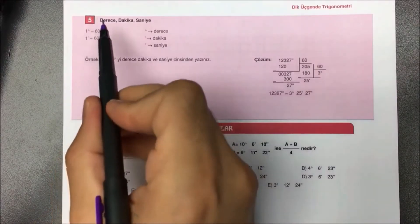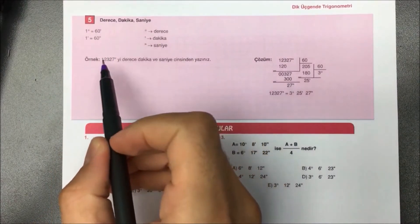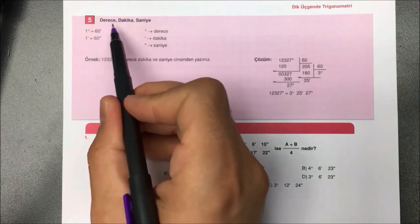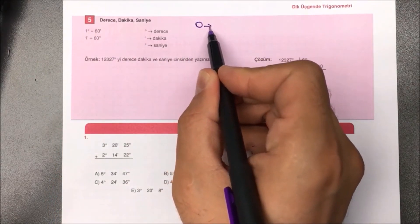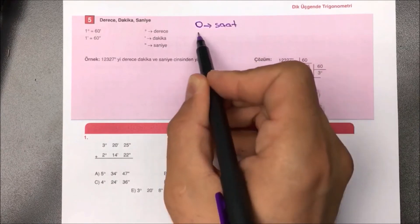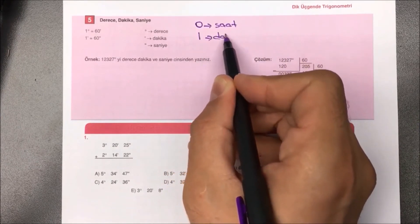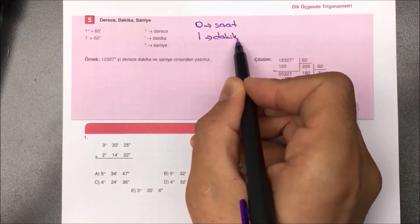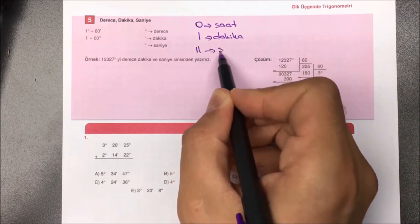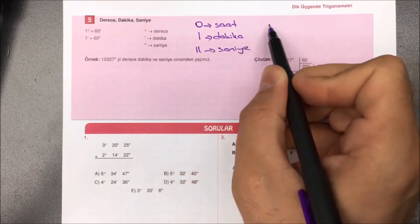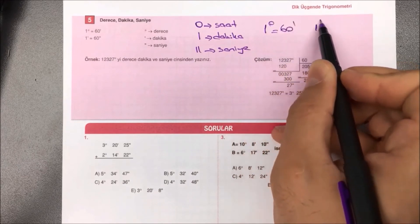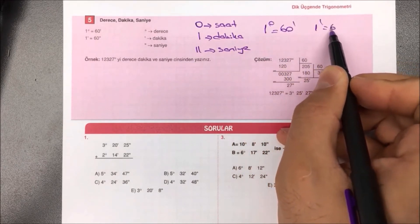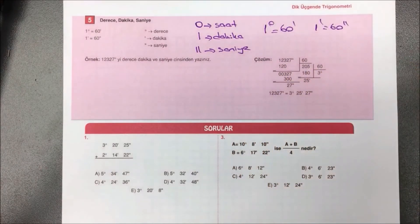Beşinci türümüzdeyiz: derece, dakika, saniye. Bunu saat gibi düşünebilirsiniz: tek çizgi dakika, iki çizgi saniye. 1 saat = 60 dakika, 1 dakika = 60 saniyedir. Bu bilgiler ışığında sorularımızı çözeceğiz.